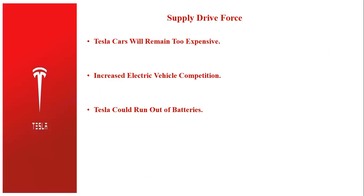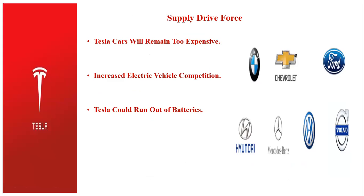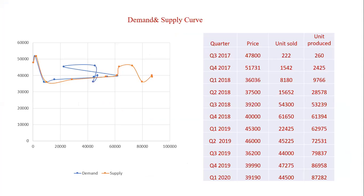Putting both demand and supply together, you will see there are a lot of ups and downs, and there is a slight point of equilibrium where units produced almost intersect with units sold. This is seen here in Q4 2018, where the two observations are almost near each other. But if we go further into 2019, you will find units produced become increasing and supply increased — units produced exceeded unit demand, and it is very clear.